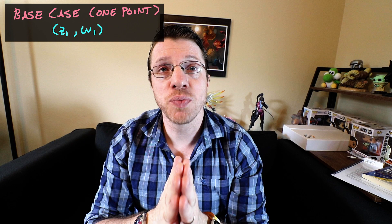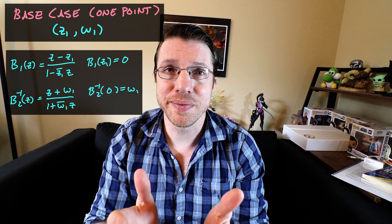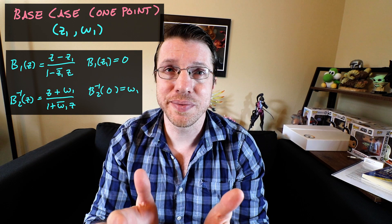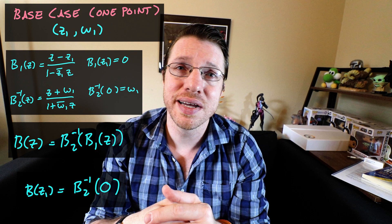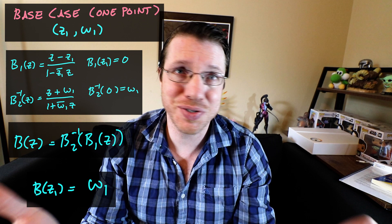In order to prove Pick's theorem, we are going to simultaneously show that this matrix is positive semi-definite while also showing that the collection of points are interpolatable. Our base case of n equals 1 is relatively simple. We have the point z1, w1, and we would like to find a Blaschke function that sends z1 to w1. We start with two Blaschke functions that send z1 and w1 to 0 individually, take the inverse of the second one, and compose them. Inserting z1 into the composition, the inside function sends z1 to 0, and the outside function sends 0 to w1.